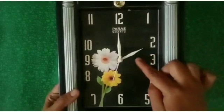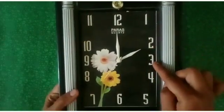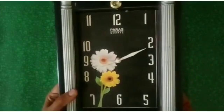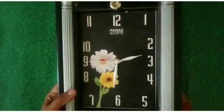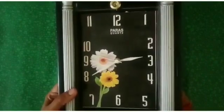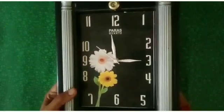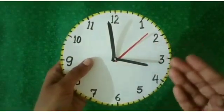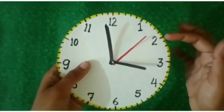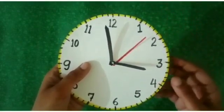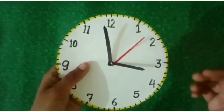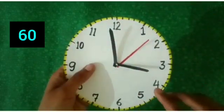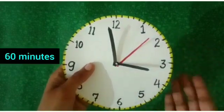Students, the hour hand moves from one number to its nearest number in one hour. Till then, the minute's hand makes one round of the dial in one hour. It means it completes 60 minutes. In the same way, there are 5 marks or 5 divisions between 2 numbers and these 5 divisions represent 5 minutes and there are 60 small divisions on the face of the clock and these 60 divisions represent 60 minutes.